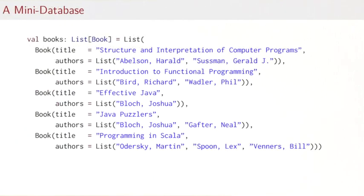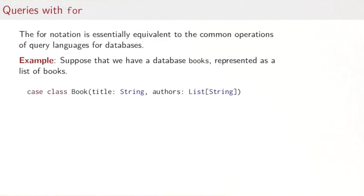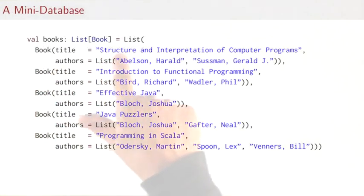Here's a mini database that will fit comfortably in memory. It's just a list of five books, and each book has title and authors. What I've done here is I've used named parameters, which you can do in Scala.